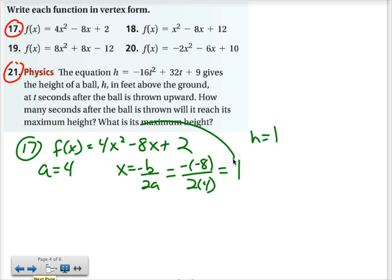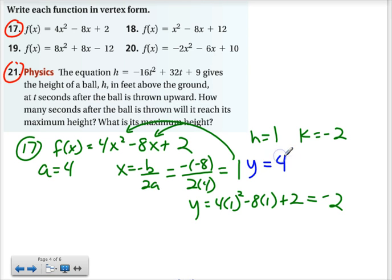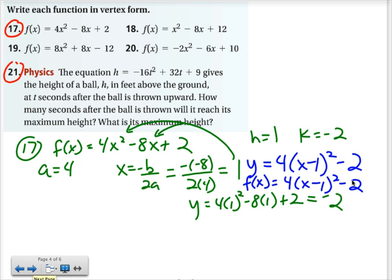Now I need to take that 1 and plug it in for x into the original equation to figure out what k is. So y equals 4 times 1 squared minus 8 times 1 plus 2. Well, following the order of operations, 1 squared is 1, 4 times 1 is 4, 8 times 1 is 8, 4 minus 8 is negative 4, and negative 4 plus 2 is negative 2. So my k value is negative 2. And again, all I need to write these in vertex form is a, h, and k. I have all those things. y equals 4 times x minus 1 squared minus 2. And it did say to write each function. So I'm going to go ahead and use function notation. f(x) equals 4 times the quantity x minus 1 squared minus 2.